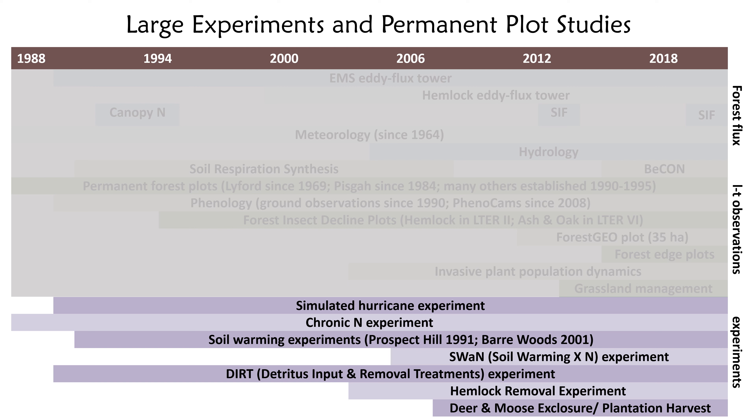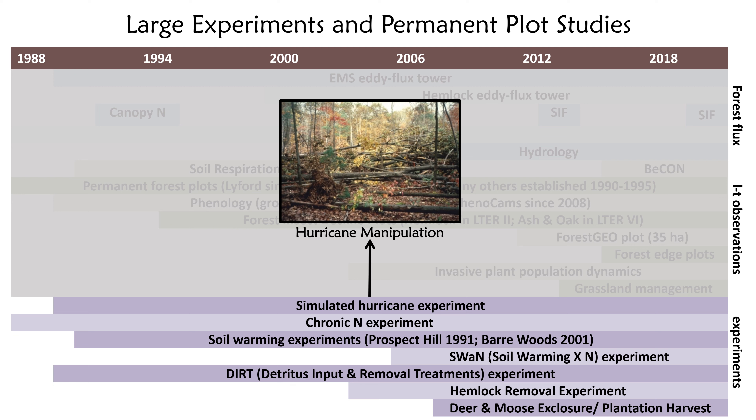Given the theme of this workshop, I'm going to focus on the set of manipulation experiments shown here. I don't have time today to cover all of them, but I'd like to quickly highlight a number. One of the longest-running is the hurricane manipulation experiment, established in 1990 to simulate the 1938 hurricane that came through New England — particularly Massachusetts — and this experiment was designed to look at forest recovery following a disturbance of that type.